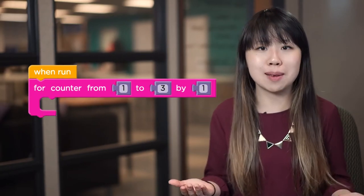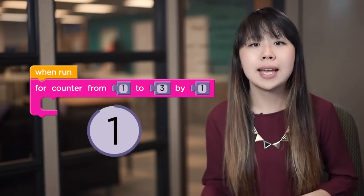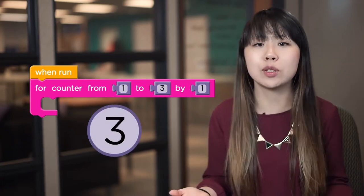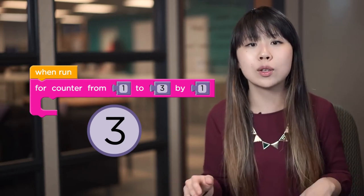The for loop knows how many times it has run by using a counter variable that is set to the starting value at the beginning of the loop and has the increment added to it each time the loop is run. As soon as the counter variable is greater than the ending value, the loop stops running.